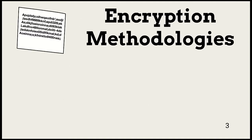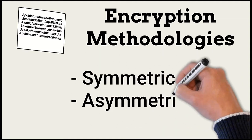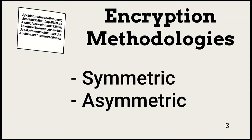One of the best ways to protect data at rest and in motion is via encryption. The two general types of encryption are symmetric and asymmetric. We take a high level look into how these work in the next slides.